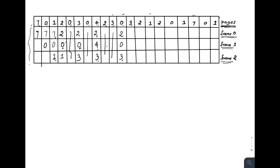Page three is already in main memory — no page fault. Page two is already there — no page fault. Page one is not in main memory, so a page fault occurs. Looking at future references: two is referenced here, zero is referenced here, and three has no future references. So three is the best candidate for replacement. Replace three with one. Frames become: two, zero, one.